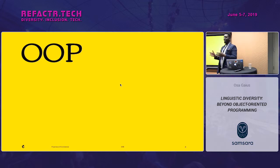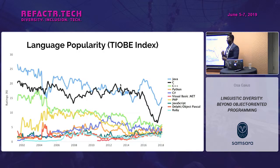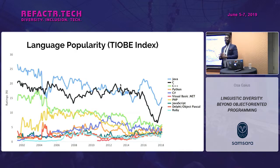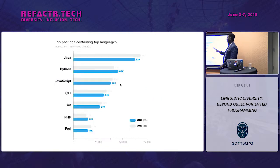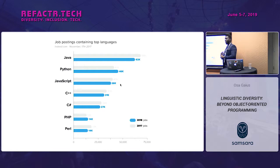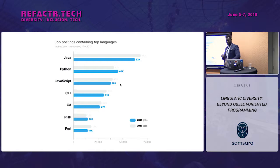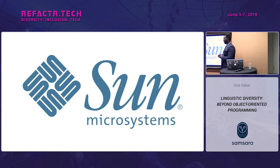So what do I mean by object-oriented programming as a hegemon? I think we can look at this in two axes. First, when we look at the most popular languages, we can clearly see at the top languages like Java, C, and C++ — traditional object-oriented languages with a particular paradigm for how they want us to write software. Second, when we look at the number of job postings, these object-oriented languages like Java and JavaScript are still dominant. So whether we look at language popularity or job listings, there is a clear dominance.